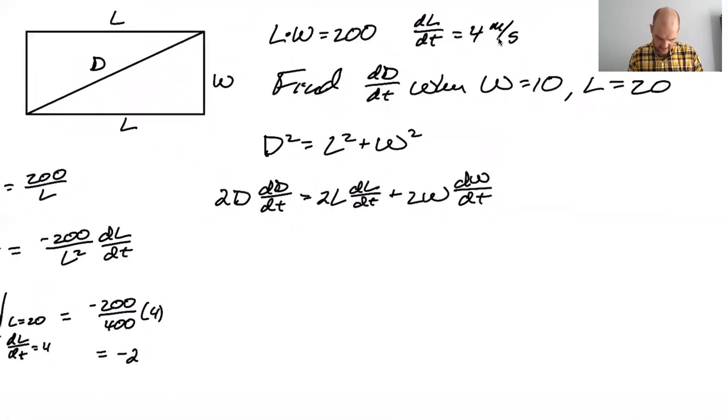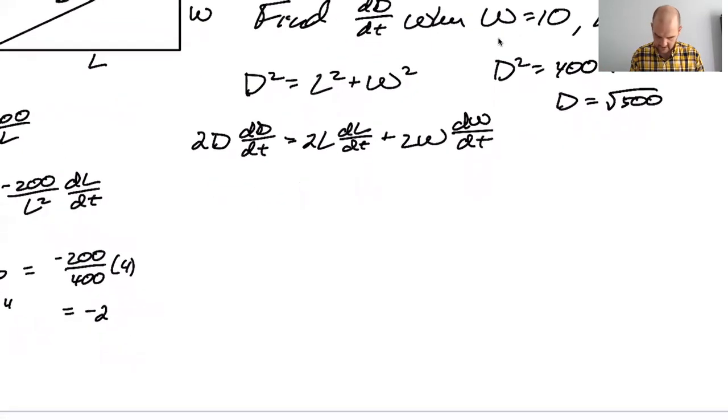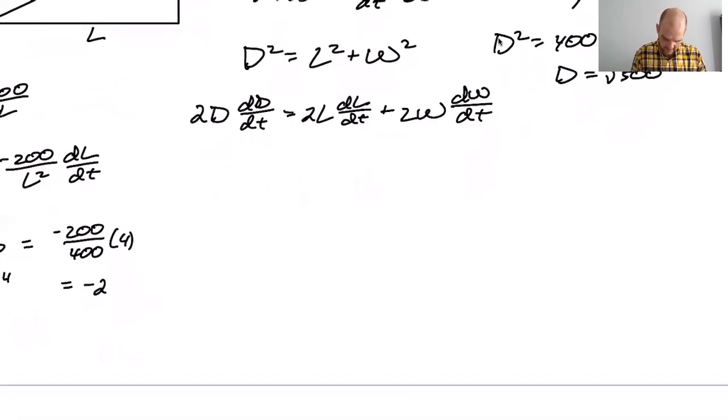but so D squared equals 400 plus 100. So D is the square root of 500. 10 root 5 if you like, but I don't like that. So I'm gonna say it's 2 root of 500.